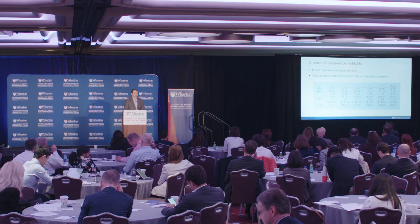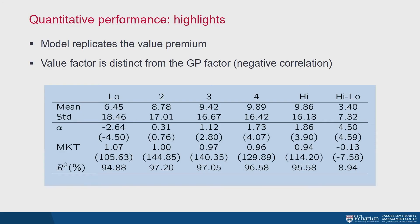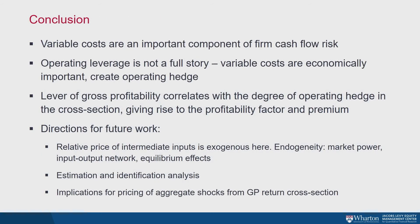Creating a value factor in the model, we also find that controlling for market exposures, the value factor does have abnormal returns, because the CAPM is not the right pricing model in this setting with multiple aggregate shocks. To conclude: the main thrust of the argument is that variable costs are quite important in determining fundamental risk of cash flows. They create an economically sizable amount of heterogeneity across firms in fundamental risk, which happens to line up with the level of profitability. That's why sorting on profitability metrics can generate a factor in the cross-section of returns — it's a factor in cash flows that shows up in returns as well.